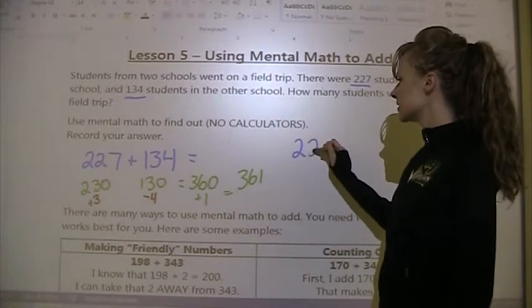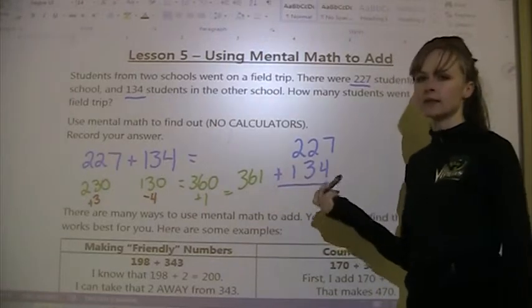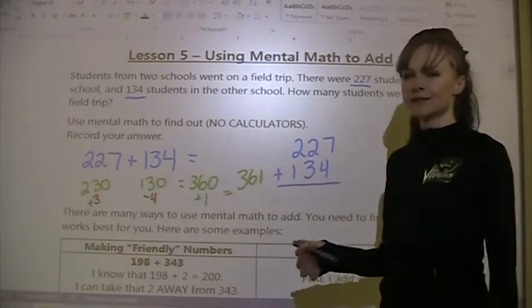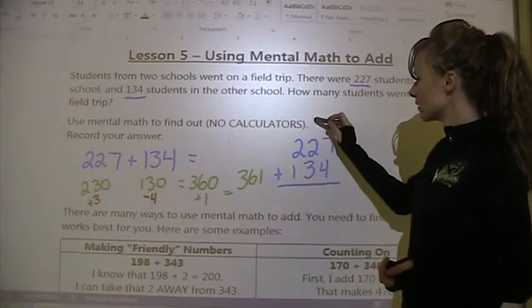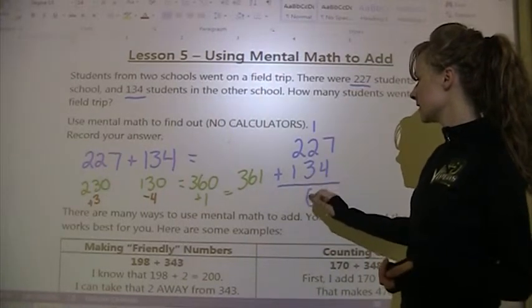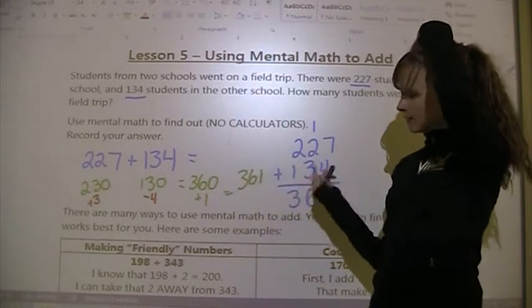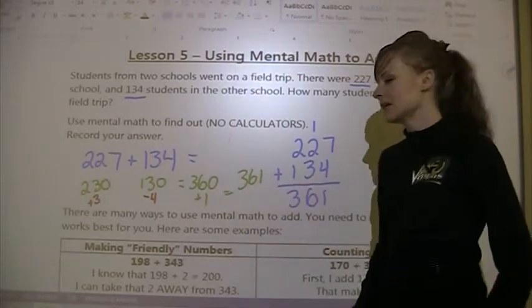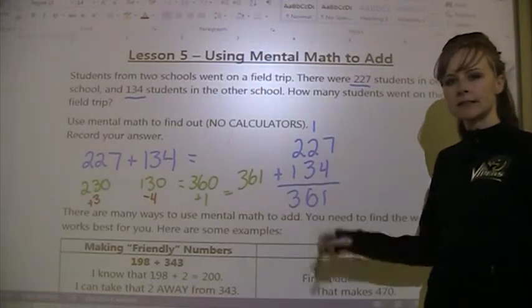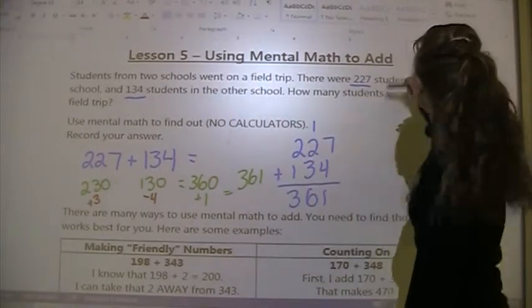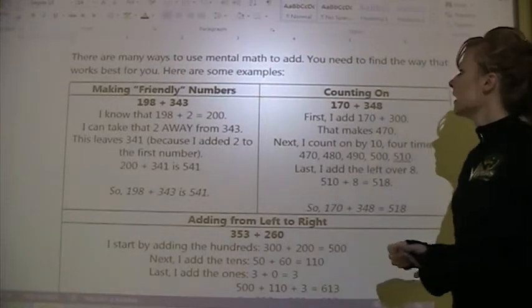If you want to check, you can use a strategy from previous years. Line up all the ones places, tens places, and hundreds places. So 7 plus 4 is 11, carry the 1; then 2 plus 3 plus 1 is 6; and 2 plus 1 is 3, giving 361. There are many ways to use mental math — you need to find the way that works best for you.